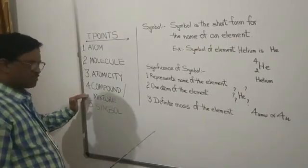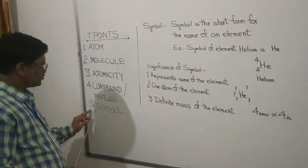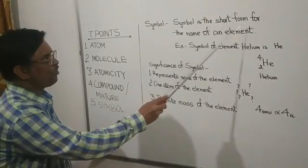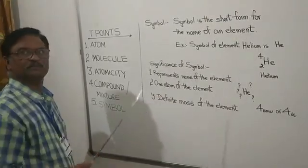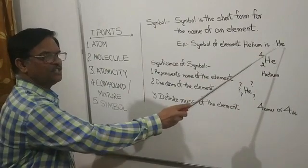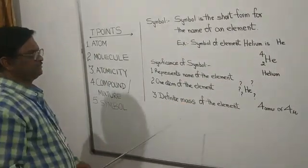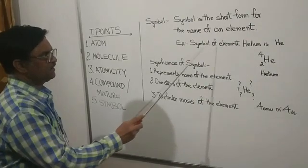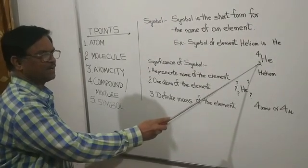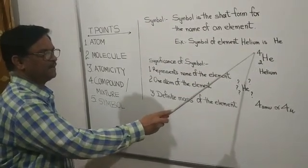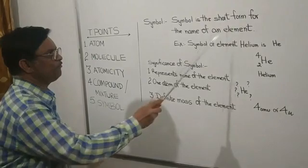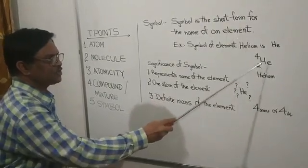After compound and mixture, we now switch to the next topic: symbol. A symbol is the short form for the name of an element. For example, He is the symbol for helium.